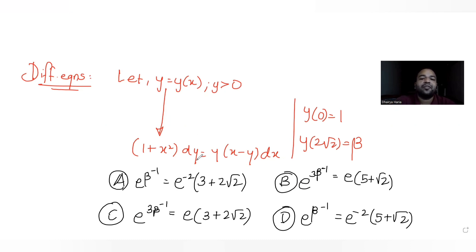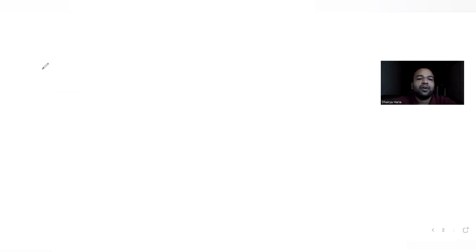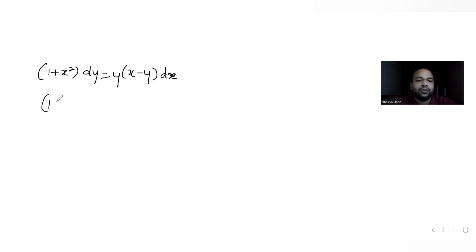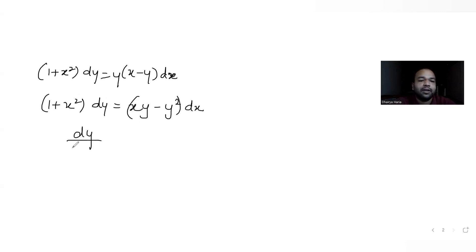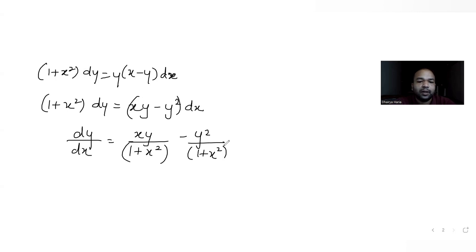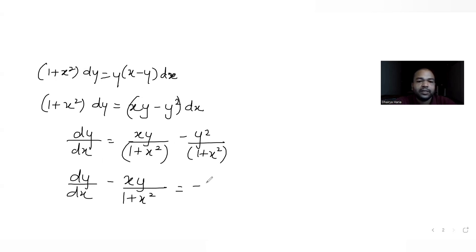Let's try to simplify and solve the differential equation. Writing it out: (1 + x²) dy = (xy − y) dx. Multiplying y with both terms gives (1 + x²) dy = (xy − y²) dx. Dividing through by dx: dy/dx = xy/(1 + x²) − y²/(1 + x²). Rearranging: dy/dx − xy/(1 + x²) = −y²/(1 + x²).